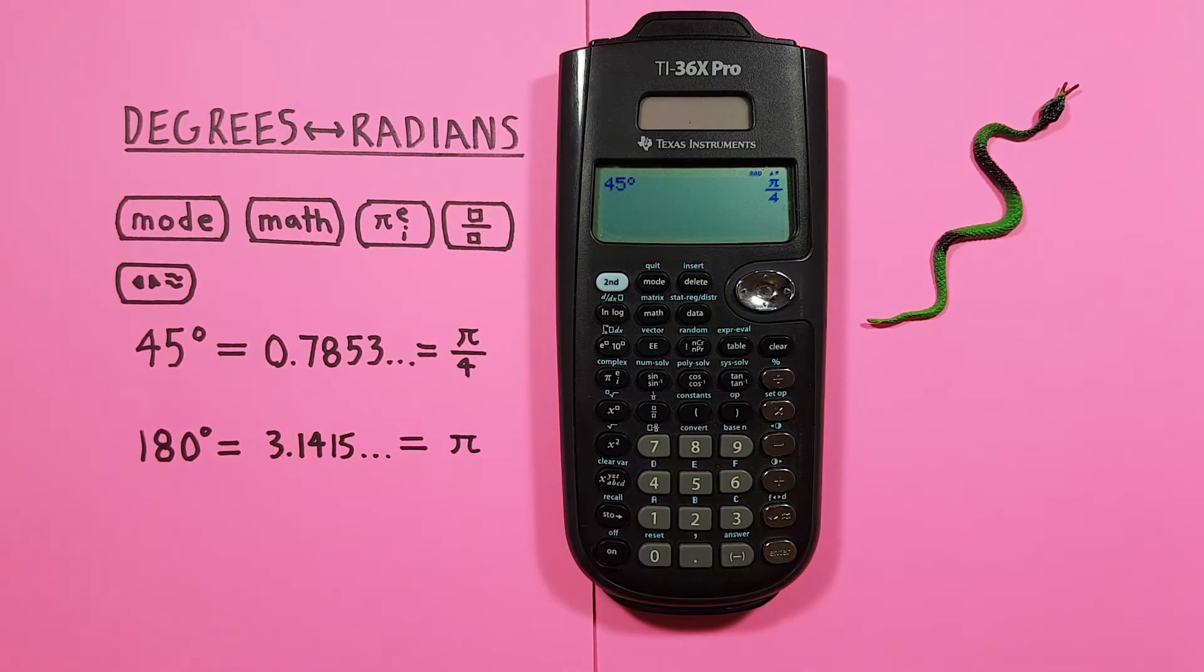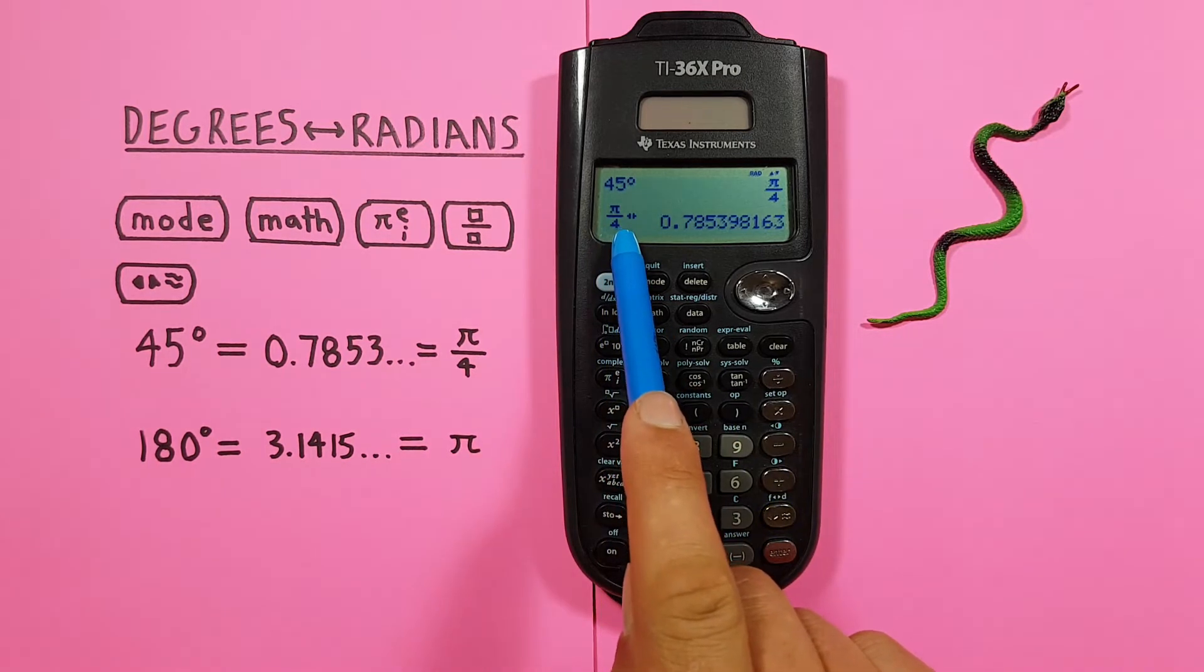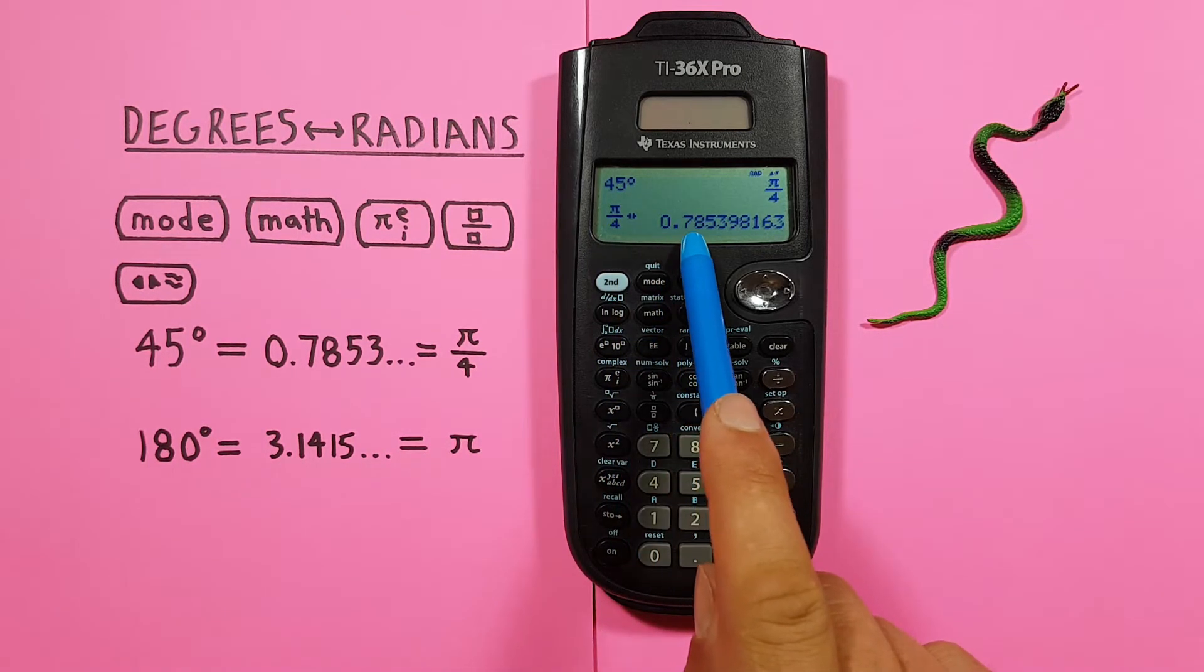But what if we want this in a decimal form? Well to do that we can use the conversion key. And see that we get PI over 4 is equal to 0.7853 etc.